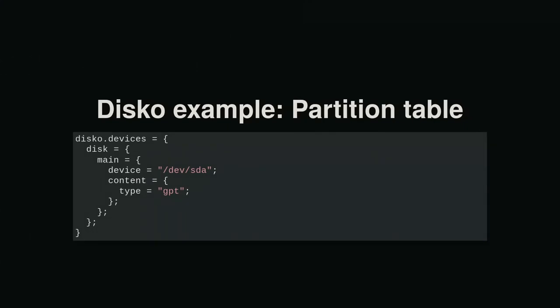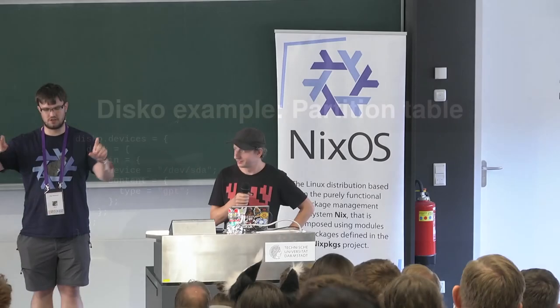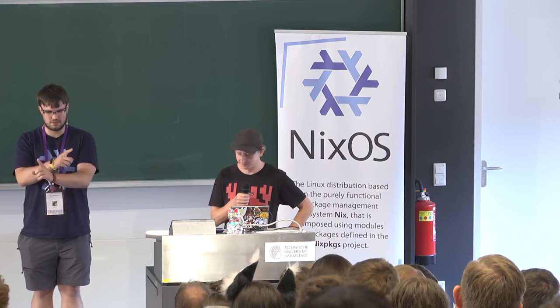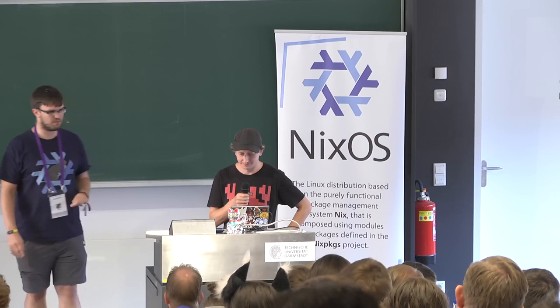Here's an example of how Disco looks — basically a partition table. There's the main disk here — you can point it at some random device, which should of course exist if you want to format it. Then you declare it as a GPT partition table. The device is only used during the initial creation of the partition table; later it's not used anymore. If you use the new GPT type, it will create a label. So if you have two NVMes and they get swapped around, you won't accidentally mount the wrong one — that's what the GPT label is doing.